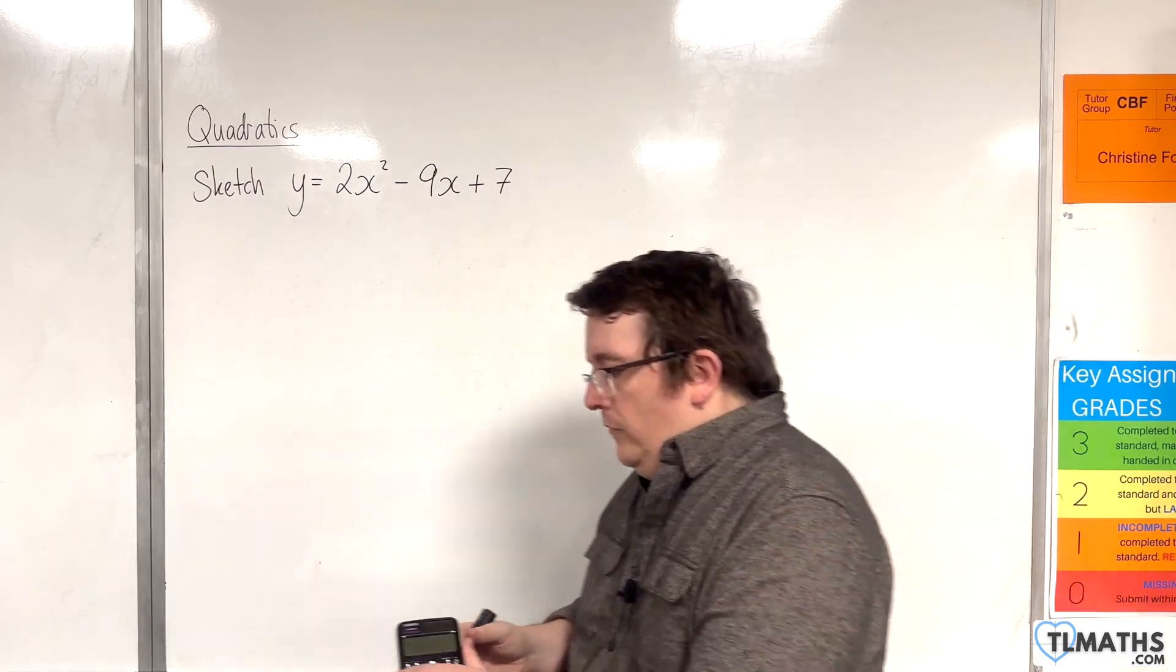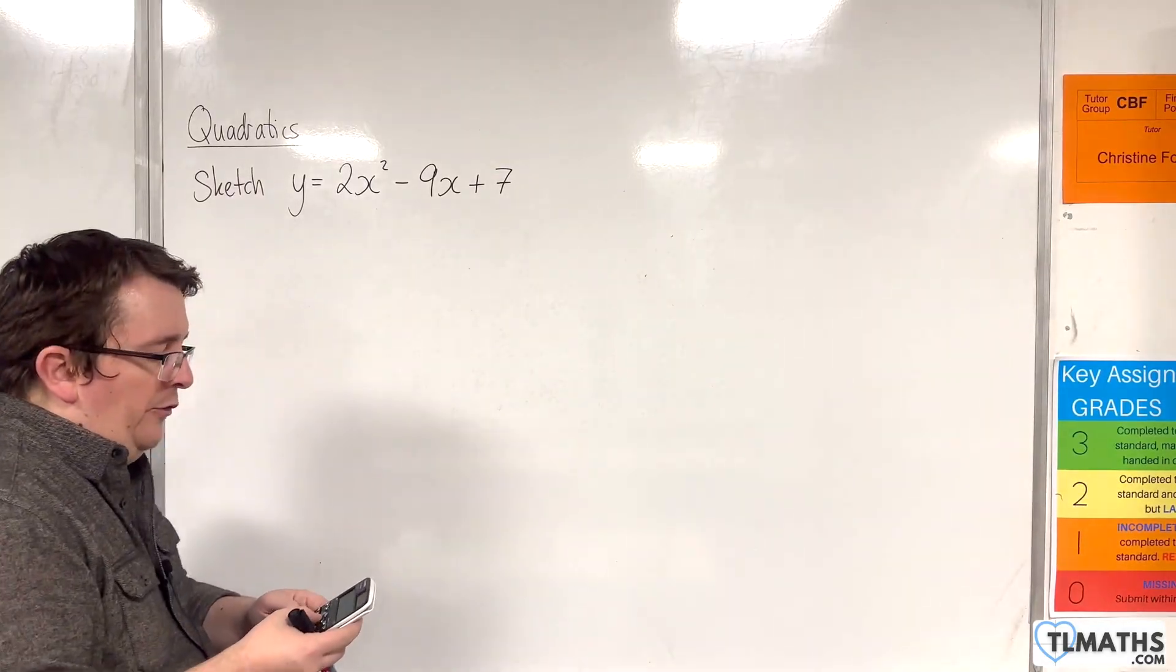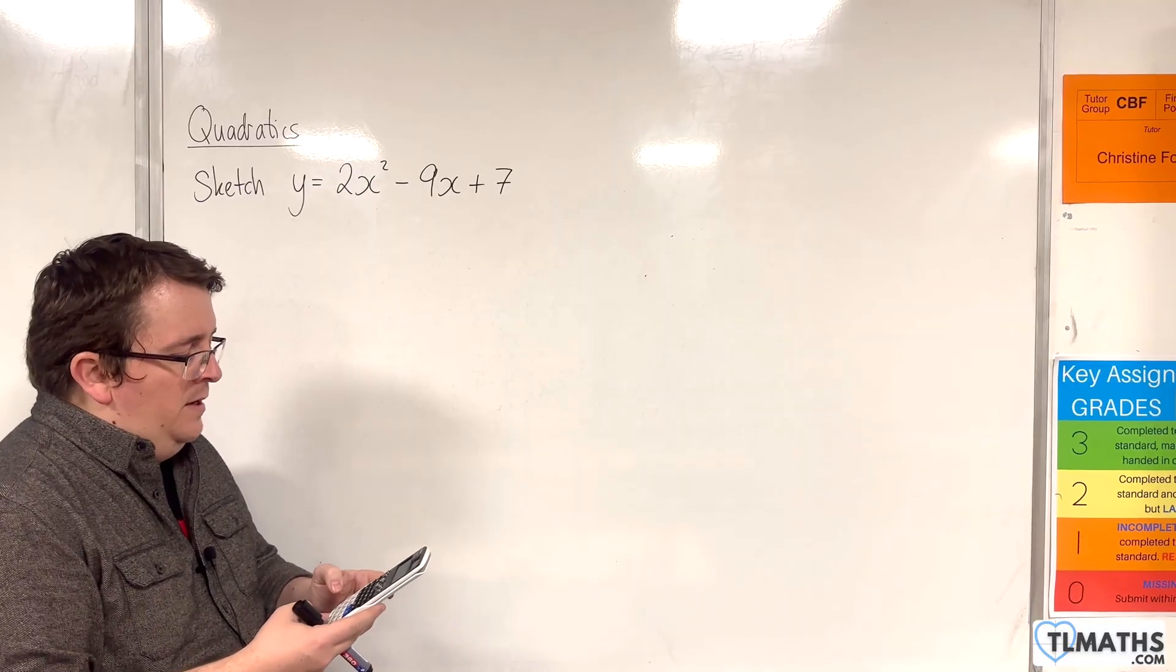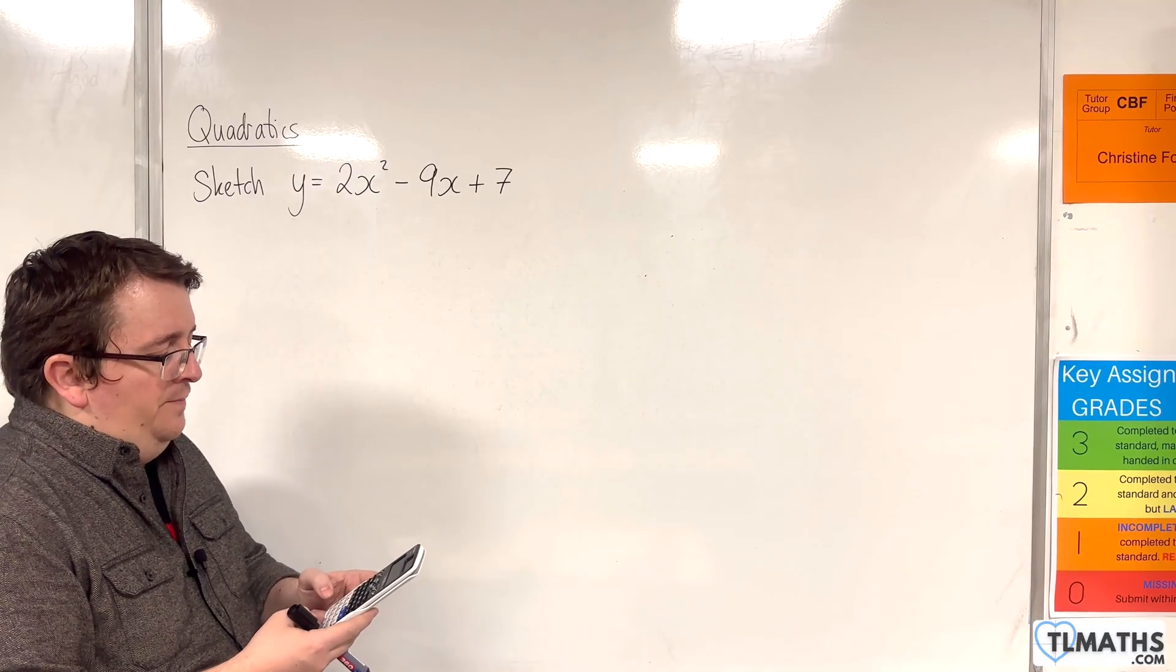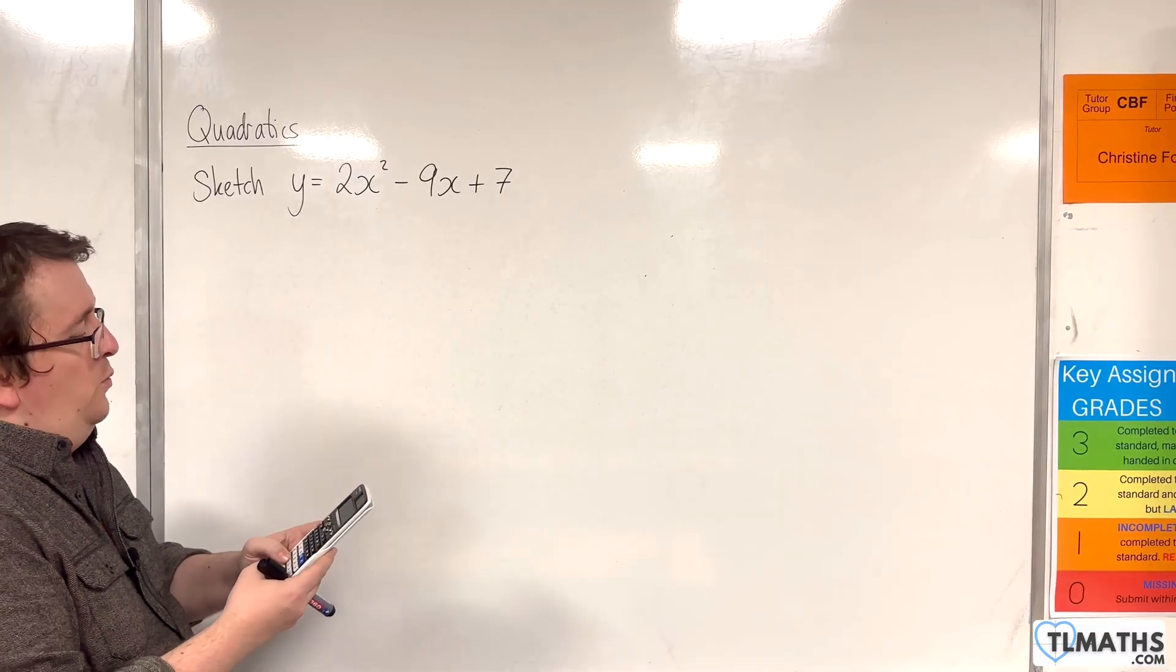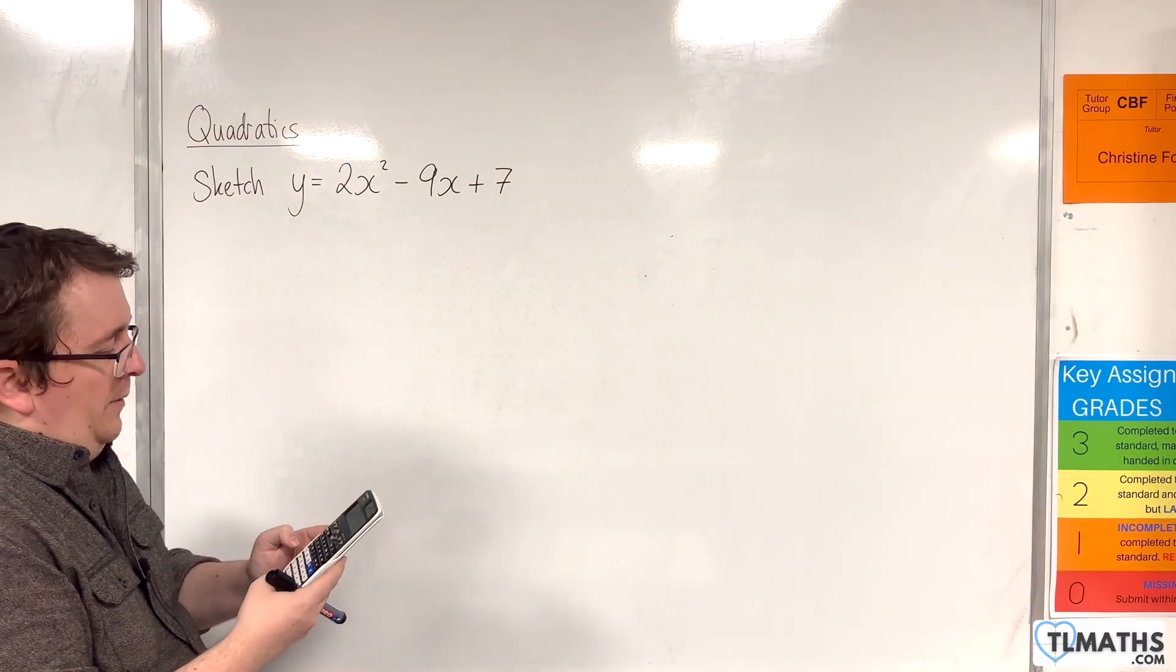So I'm going to go straight into the menu and I'm going to scroll down until I get to equation function. So A and then polynomial number 2 and degree 2. So I'm going to type in 2x squared minus 9x plus 7.